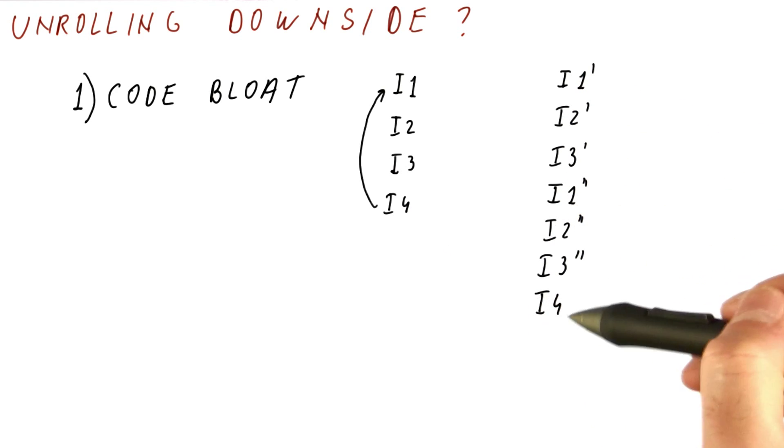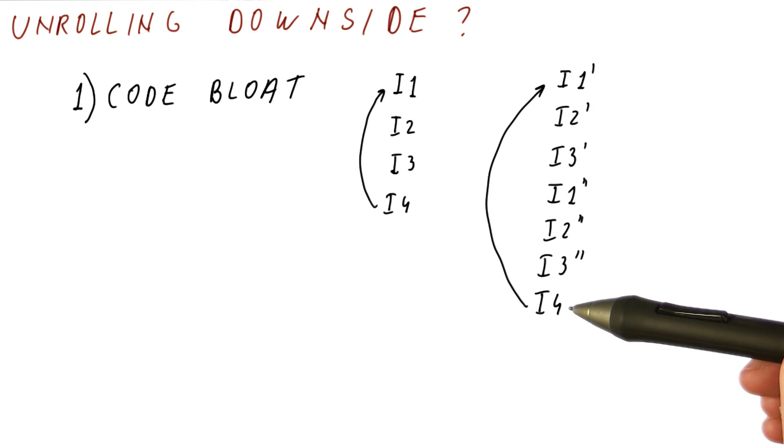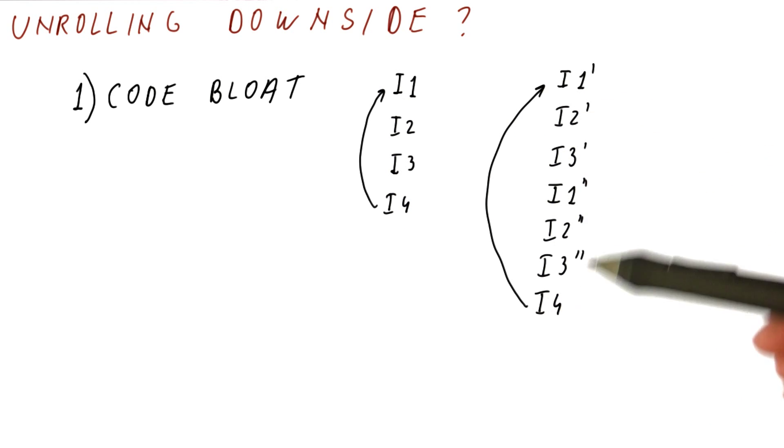And this is, for example, our branch, so we can just have one. So now there is fewer instructions executed per original iteration. We had four per iteration. Now we have seven per two iterations.